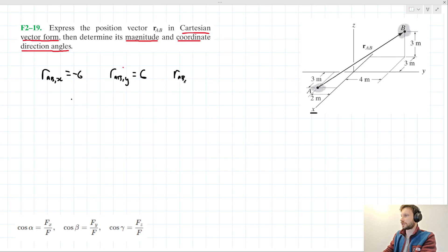And r_AB,z - let's have a look. It looks like it travels 3 meters up off the ground essentially, so that's going to take a value of 3.